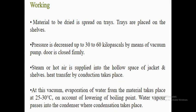Working principle of vacuum dryer: material to be dried is spread on trays. Trays are placed on the shelf. Pressure is decreased up to 30 to 60 kilo Pascal by means of vacuum pump. Door is tightly closed. Steam or hot air is supplied into the hollow space of the jacket. The mode of heat transfer here is conduction.